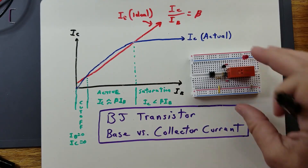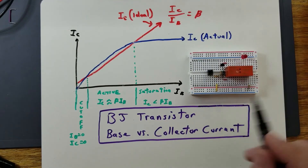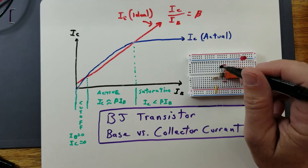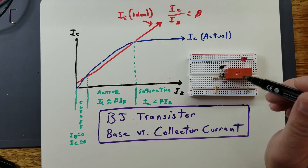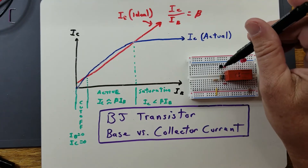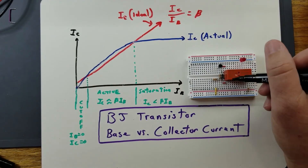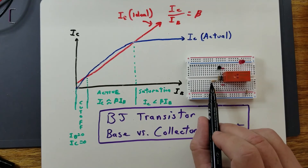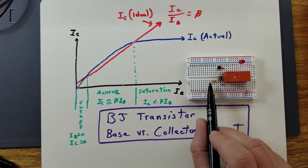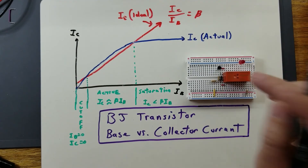Another example of a transistor switch application is controlling a relay. A resistor connected to a microcontroller output at 5 volts supplies a small base current to the transistor. That base current causes sufficient collector current to energize the relay and close it. When the microcontroller output goes back to 0 volts, there is no longer enough current through the base to energize the relay, turning it off.